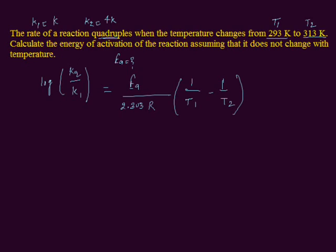K1 and K2 values are given here. T1 and T2 values are given. R is a gas constant, it is equal to 8.314. We can plug in all these known variables and find out Ea.